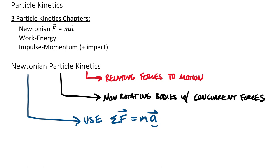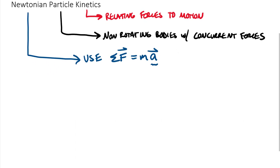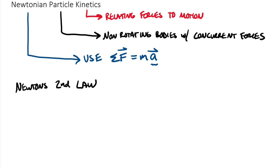As we get into work-energy and impulse-momentum, that will still be particle kinetics — it just won't be Newtonian particle kinetics. So let's take a more detailed look at Newton's second law. It is the sum of forces, these are force vectors, and this is equal to mass times an acceleration vector.